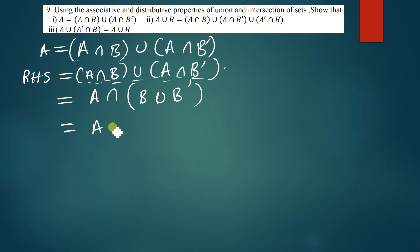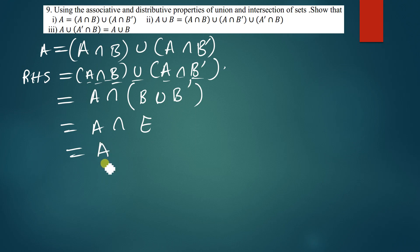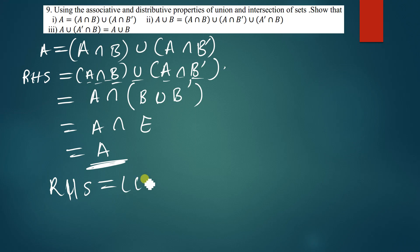If we combine B and B' — what is in B and what is not in B — we get the universal set. So A∩(universal set) gives us A, because the common elements between A and the universal set is A. This proves the right hand side equals the left hand side. Hence shown.